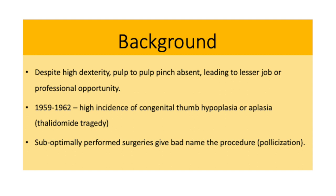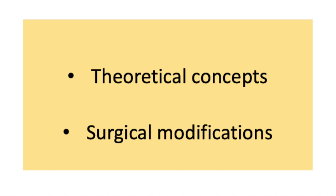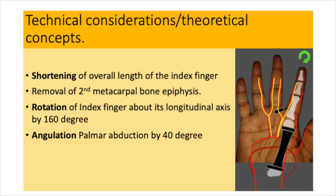This surge led to many pollicization surgeries being performed, but the results were suboptimal, which gave a bad name to the procedure. Dr. Buck-Gramcko, with vast experience in pollicization, came forward with theoretical concepts and surgical modifications for better outcomes. The key technical considerations included shortening of the overall length of the index finger, removal of the second metacarpal bone epiphysis to prevent future elongation, rotation of the index finger about its longitudinal axis by 160 degrees, and palmar abduction by 140 degrees during skeletal fixation.